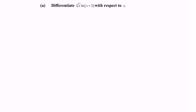Rewrite the expression. Let y equal x to the power of 1/3 multiplied with ln(x + 3). We can see there are two terms, and we can apply the product rule in order to differentiate the expression.